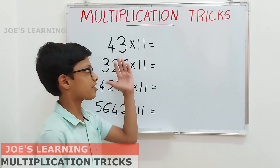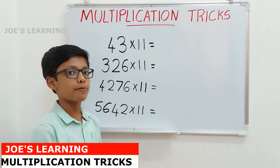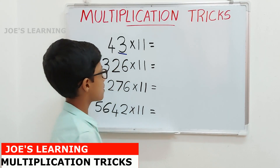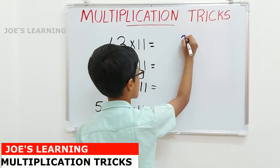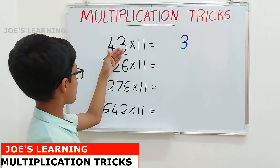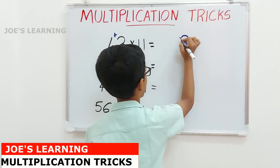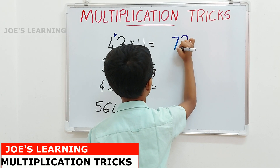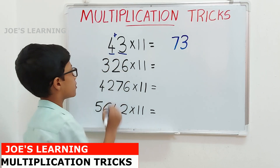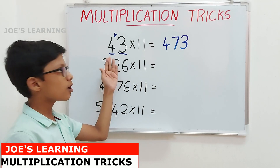First, let us look at this example: 43 multiplied by 11. To find the product, we must first look at the last digit. The last digit being 3, we write 3 as the last digit of our product. Now to find the next digit, we add 4 plus 3, which equals 7, so we write down 7. Then we look at the first digit, which is 4, and write that down as well.